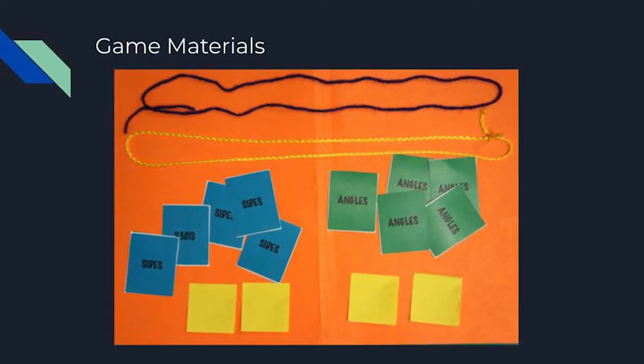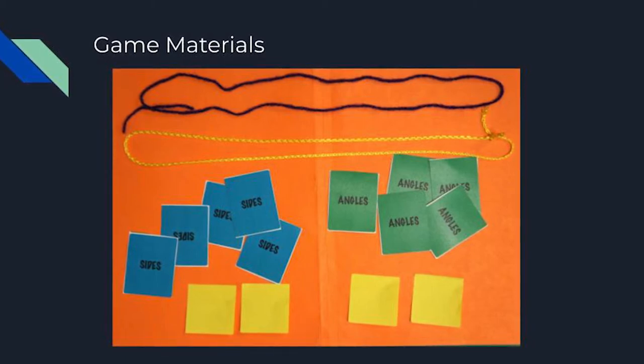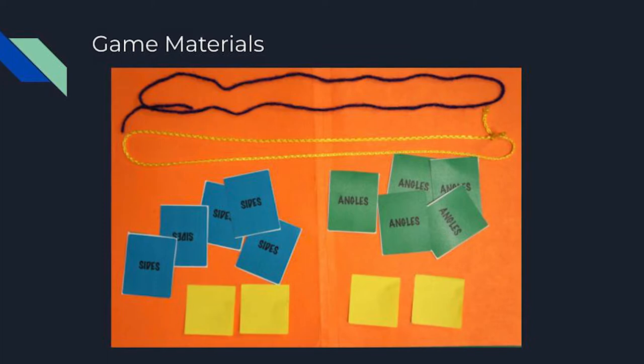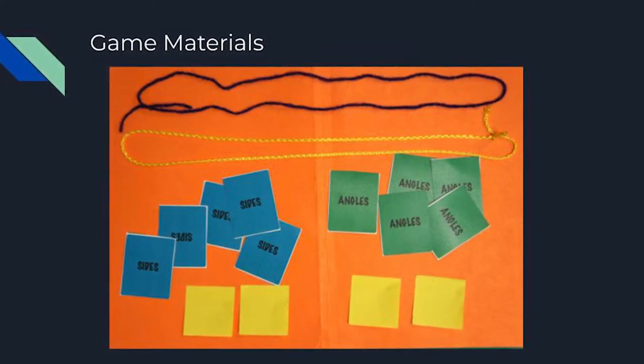The materials needed to play this game include the angle and side property cards, three feet of string per pair of players if you are inside, three yards per group of four players if outside. Each group also needs four sticky notes or a sheet of paper for measuring angles.